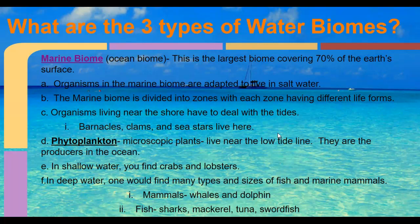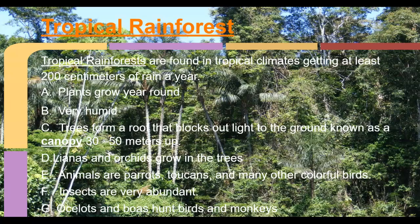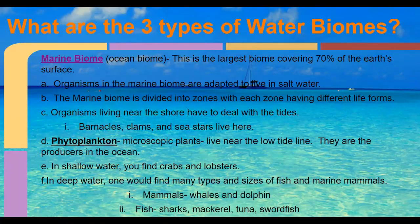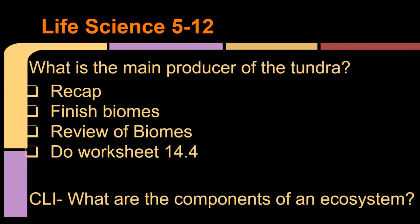That takes us to the end of our biomes. Today we did the temperate deciduous forest where we live, the tropical rainforest which is definitely endangered, the marine biome which is mostly salt water, the estuaries that are a blend of salt and fresh water with brackish water, and the different types of freshwater biomes. Make sure you get these review questions done.